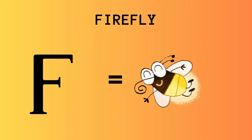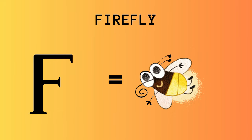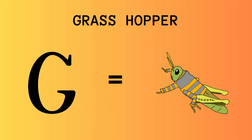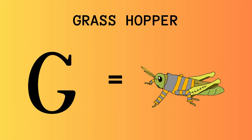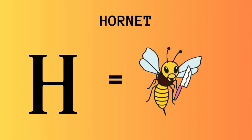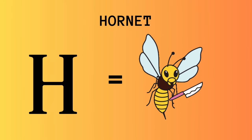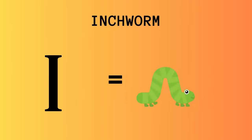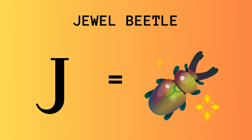F for Firefly. G for Grasshopper. H for Hornet. I for Inchworm. J for Jewel Beetle.